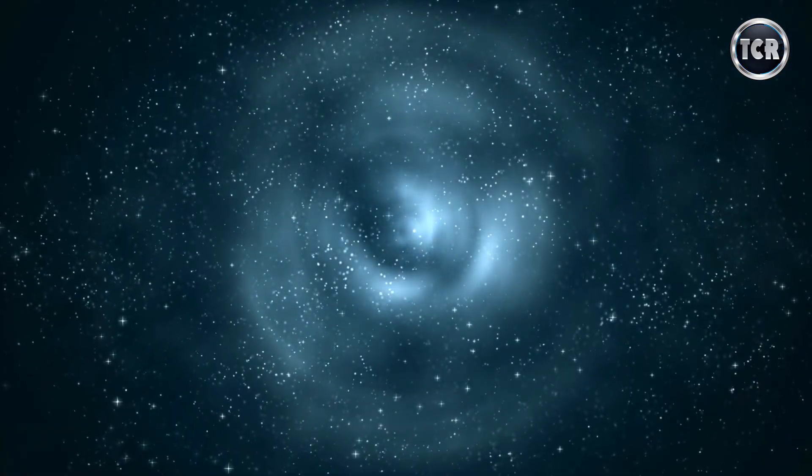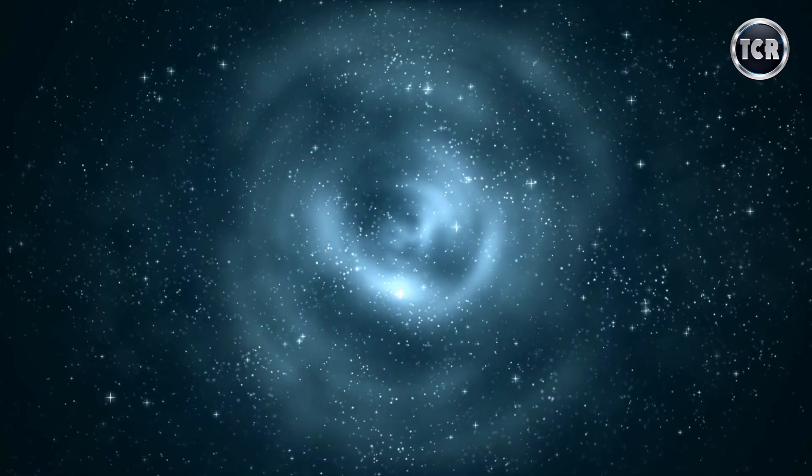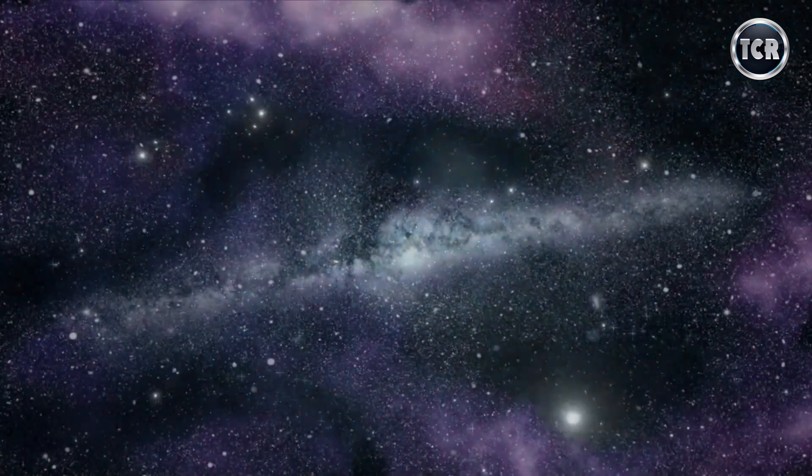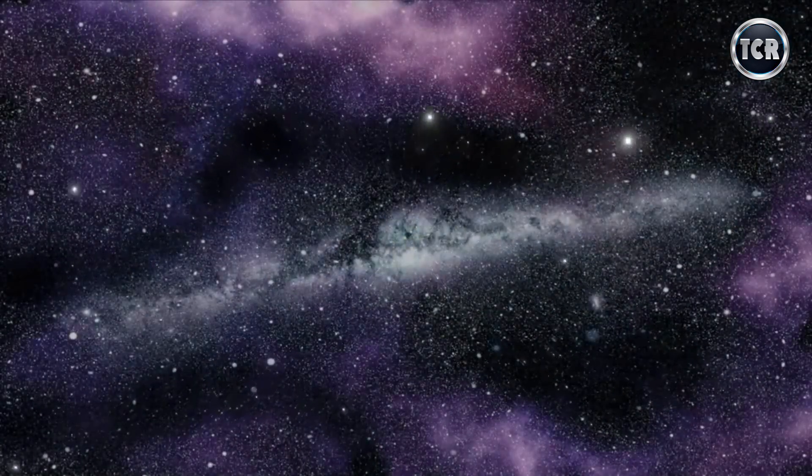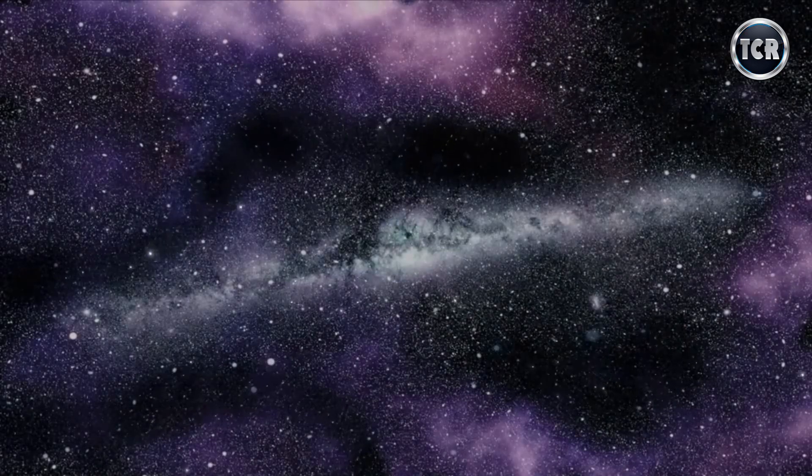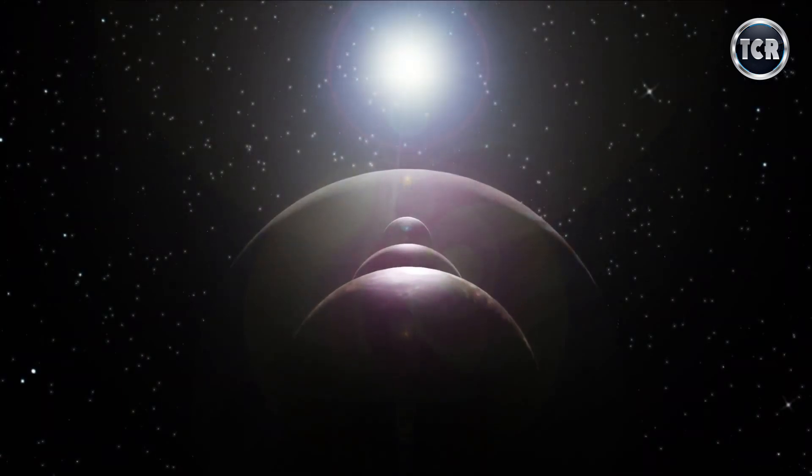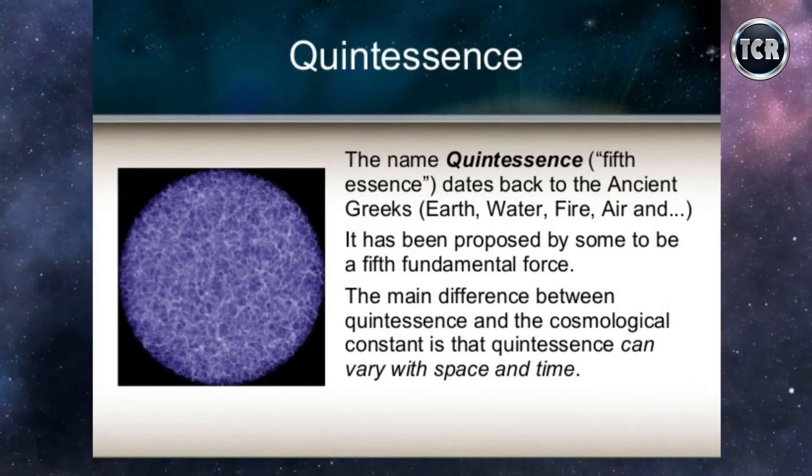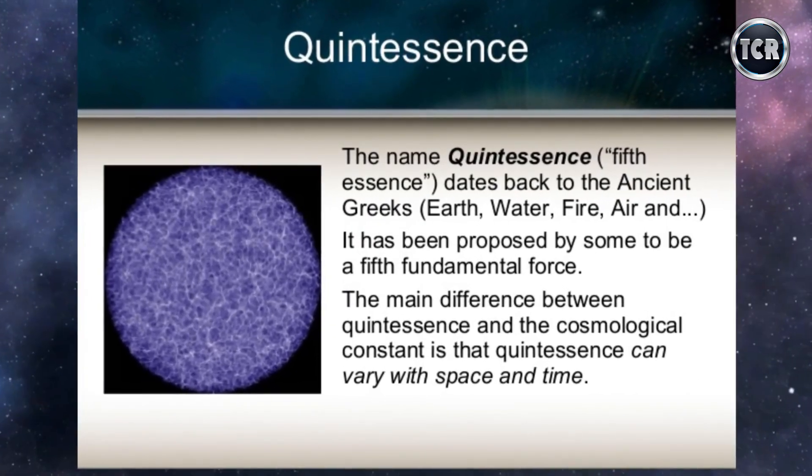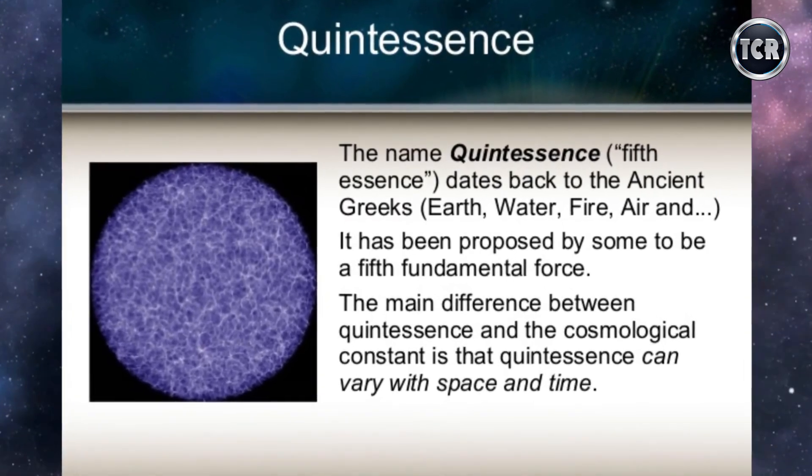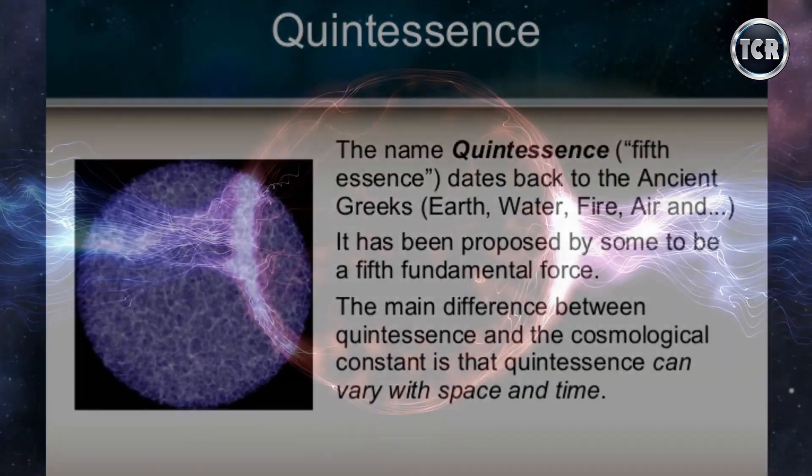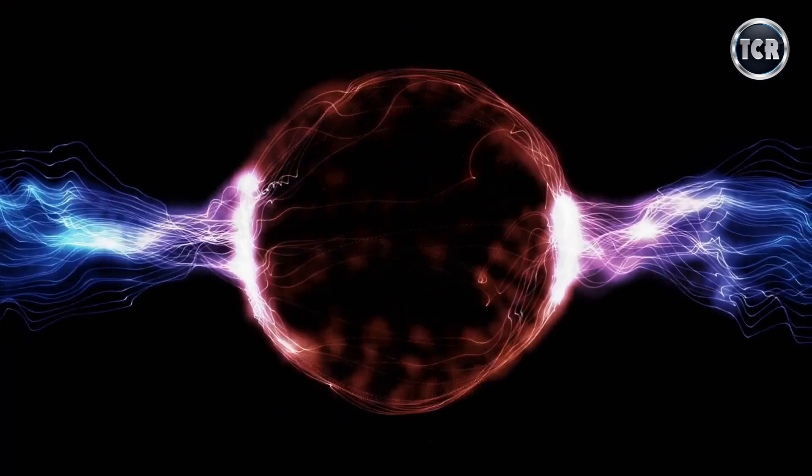A competing theory, on the other hand, claims that dark energy does not have to be constant to reconcile with data of previous cosmic expansion. Rather, dark energy could be a dynamic field that changes through time known as quintessence. Unlike the cosmological constant, quintessence can be either repulsive or attractive, depending on the ratio of its kinetic and potential energy at a given time.